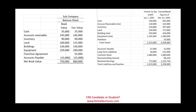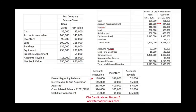Before preparing the statement of cash flows, we must make certain adjustments to operating accounts like accounts receivable, inventory, and accounts payable. For accounts receivable: we started with $118,000, added the subsidiary's fair value receivable of $145,000, giving an adjusted figure of $263,000. The consolidated ending figure is $324,000, meaning there was an additional increase of $61,000 in accounts receivable. An increase in accounts receivable is a negative cash flow from operations of $61,000.